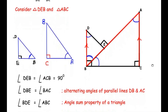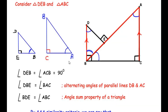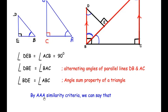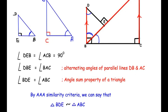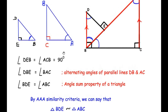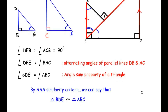Writing the formal reasons: angle DEB equals angle ACB equals 90 degrees from the figure; angle DBE equals angle DAC as alternate angles of parallel lines DB and AC; and angle BDE equals angle ABC by the angle sum property of a triangle. Since two angles are equal in both triangles, the third must also be equal. Therefore, by AAA similarity, triangle BDE is similar to triangle ABC.